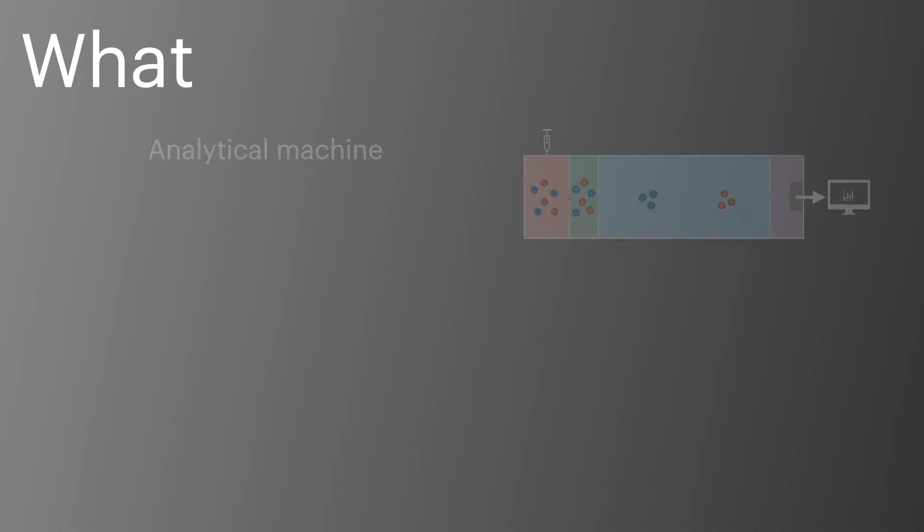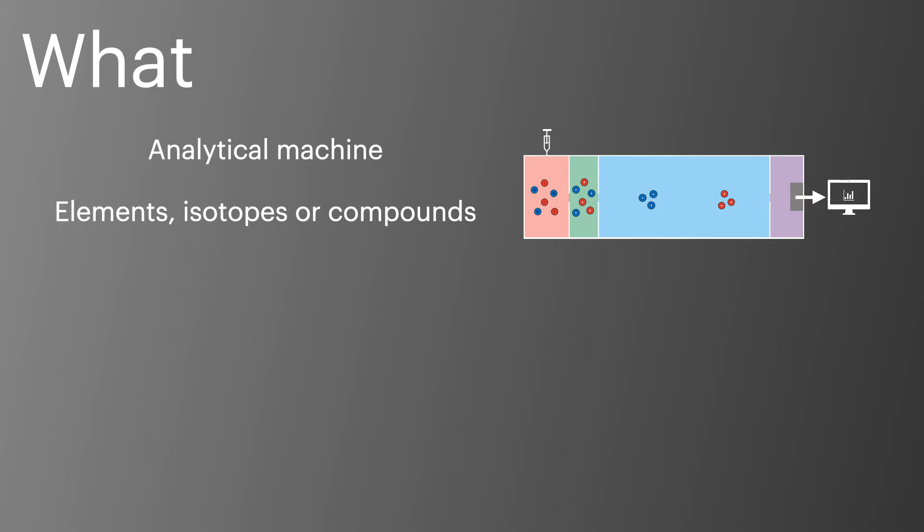A mass spectrometer is an analytical machine used in many laboratories across the world. It's a tool used to measure the masses of different elements, isotopes, or compounds.